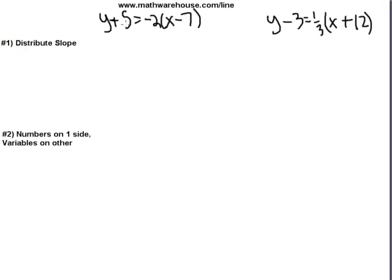Okay, let's try to do the same thing to these two equations here. Let's try to convert y plus 5 equals negative 2 times x minus 7 to standard form. And then the one on the right will also try to convert. And by the way, if you are interested in more practice problems, check out mathwarehouse.com slash line. There's a bunch of other worksheets with answer keys and goodies on that website. That'll help you understand this. So remember, step one is to distribute slope. And our slope is right here.